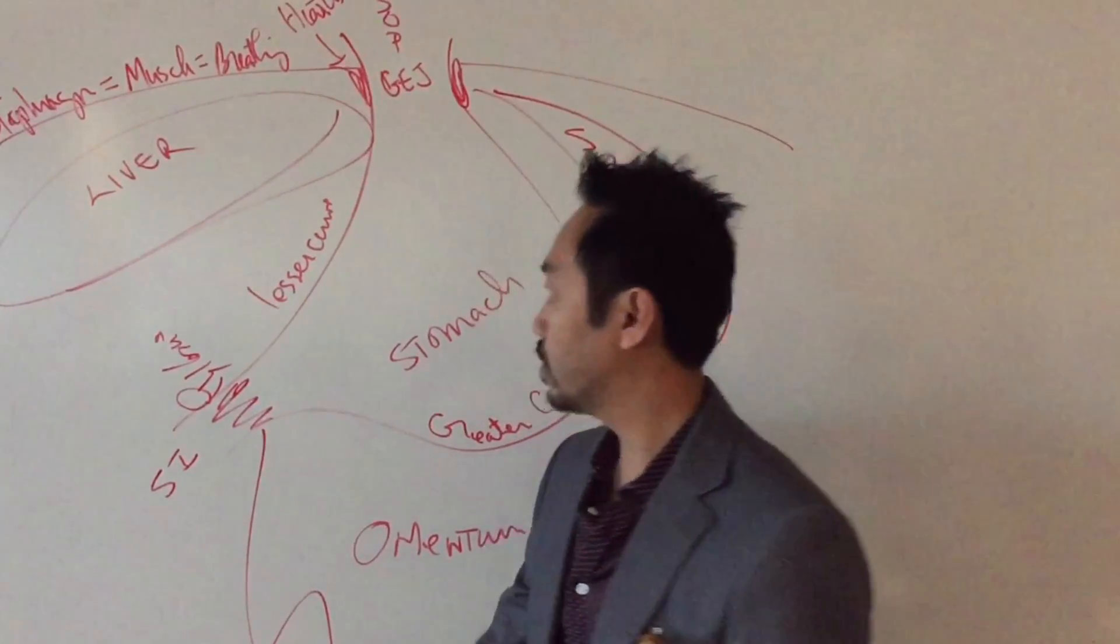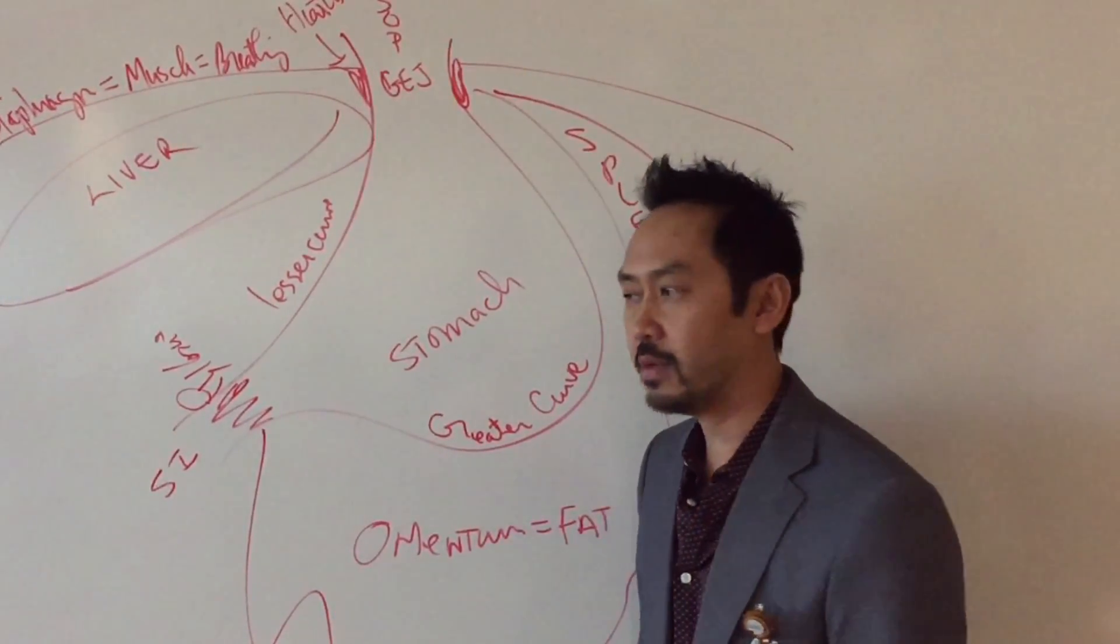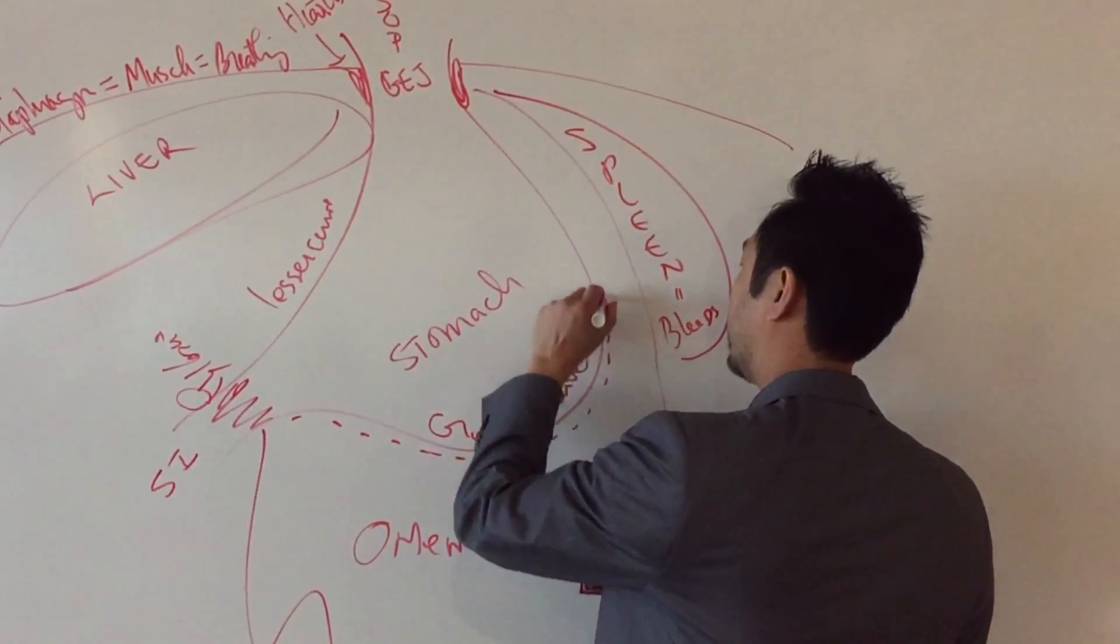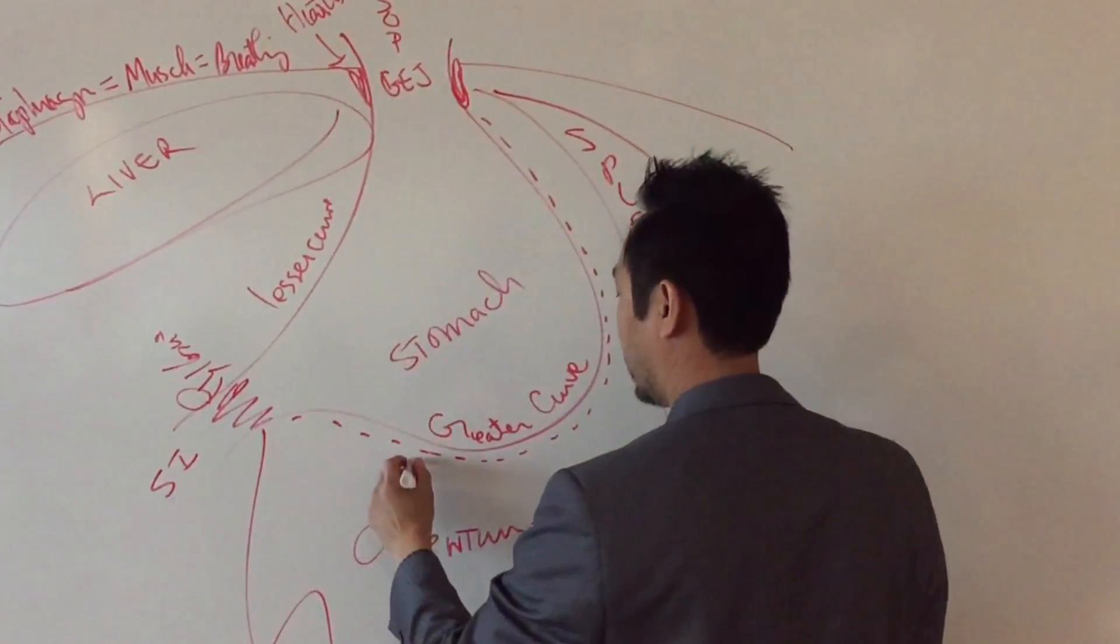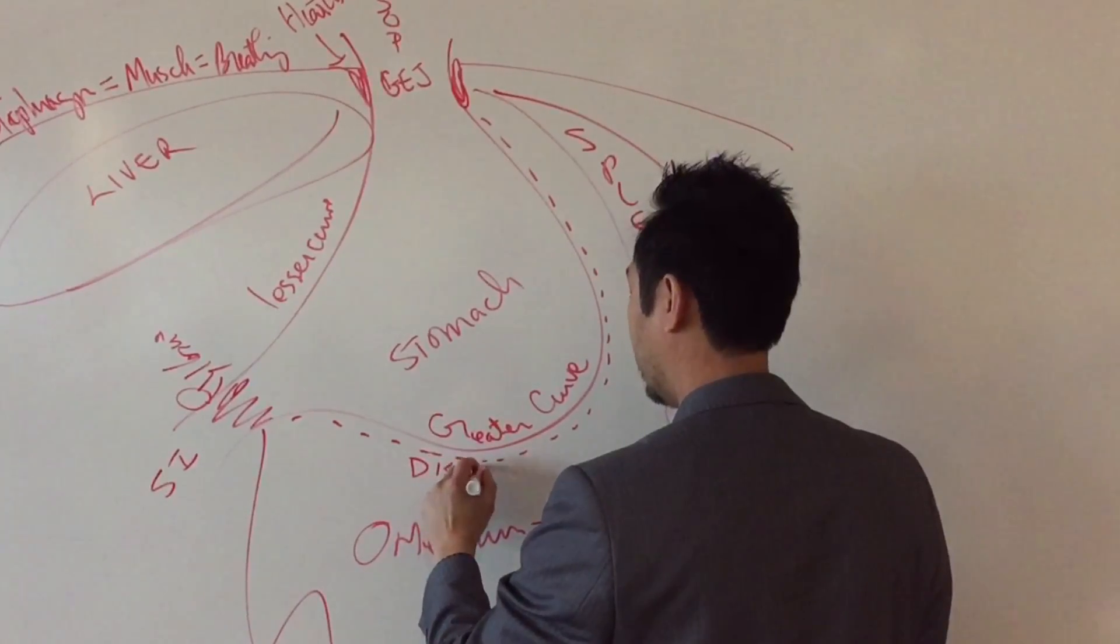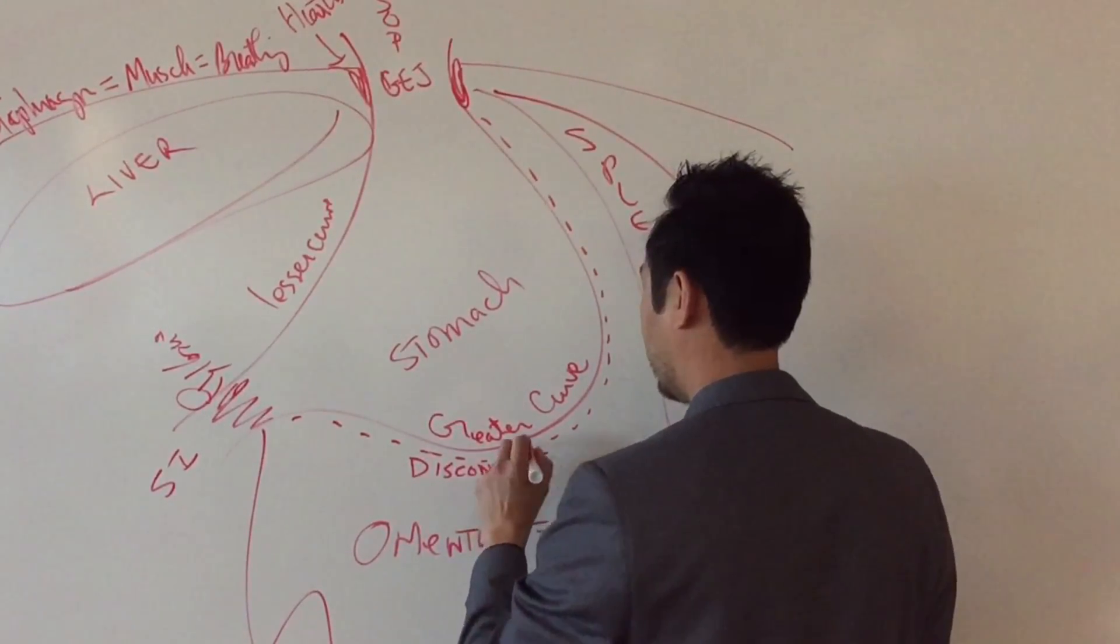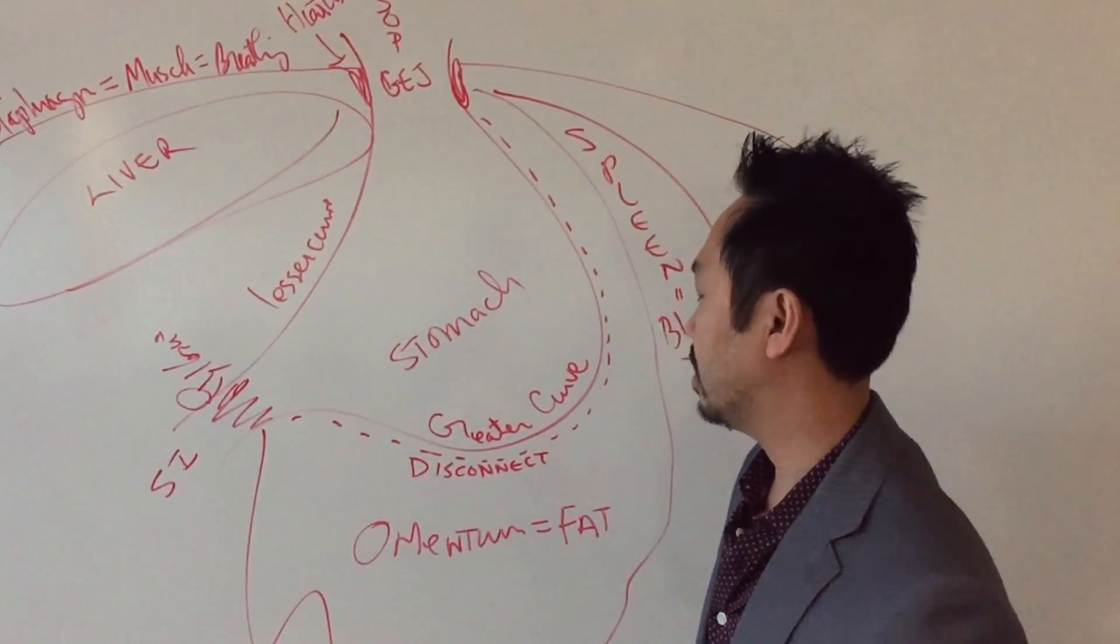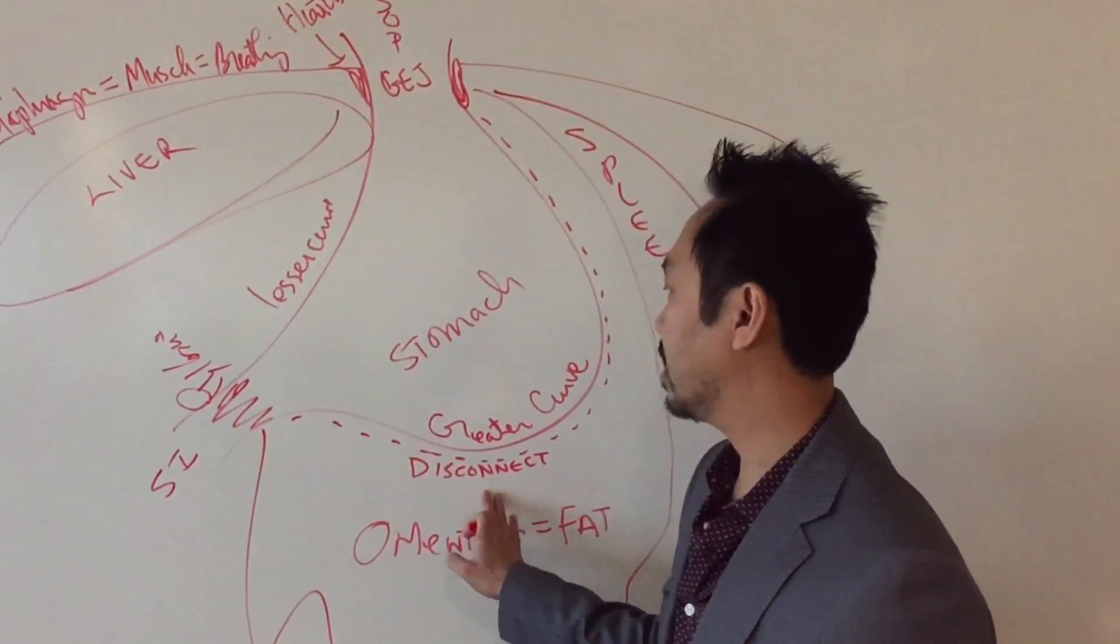All right. So two steps to the sleeve gastrectomy. What's the first step? Disconnect the omentum. So I'm going to take a special gun and disconnect the omentum. Do I remove the omentum? No. That's a very big surgery. That's usually a cancer surgery for people with lymphomas and stomach cancers and stuff. So I just disconnect it.